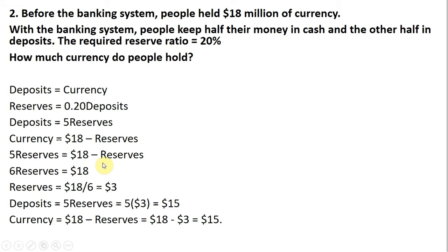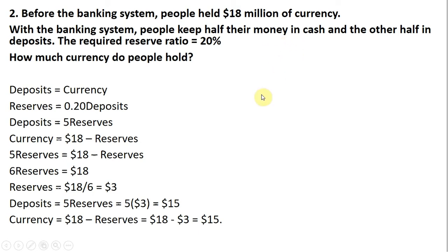I'm going to solve for reserves. Adding one reserve to both sides, we've got 6 reserves equals 18. Dividing by 6, reserves equals $3 million. Plugging back into our formula, deposits equal 5 times reserves: 5 times 3 equals $15 million. As for currency, currency equals 18 minus reserves — reserves are 3 — so currency equals $15 million. That's what people are holding under the condition that people keep half their money in cash and the other half in deposits.